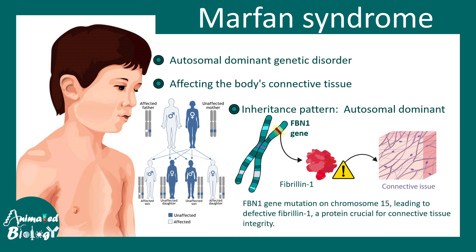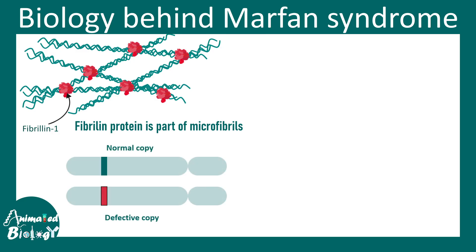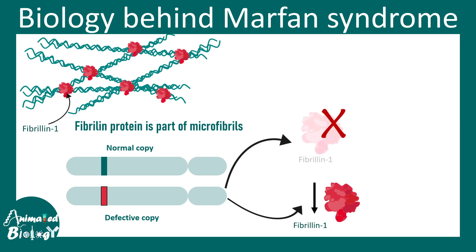The FBN1 gene codes for a protein known as fibrillin, which is an important component of connective tissue. The FBN1 gene mutation on chromosome 15 leads to these problems. Fibrillin protein is a part of microfibrils — we can see how fibrillin cross-links all the microfibrils, which are super important because they give our tissues elasticity. Even one defective copy is enough to create the outcome of the disease, which is why it is autosomal dominant — it overrides the normal copy.